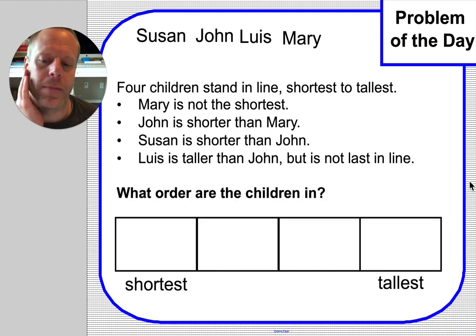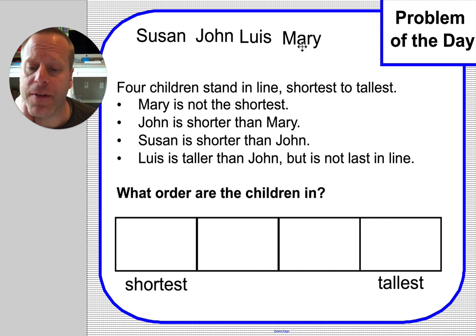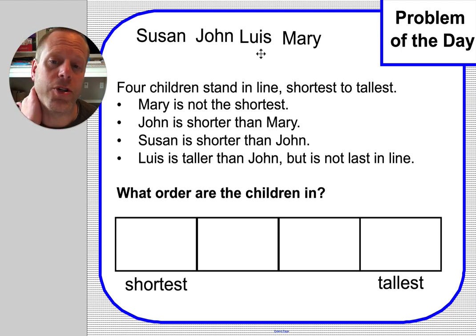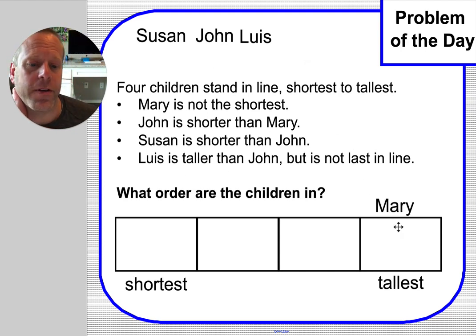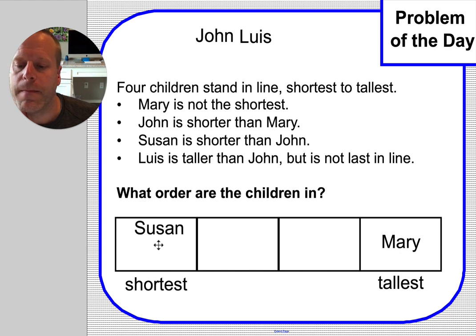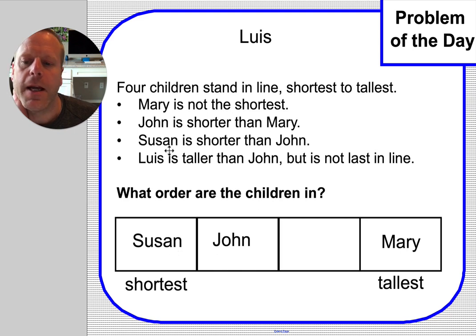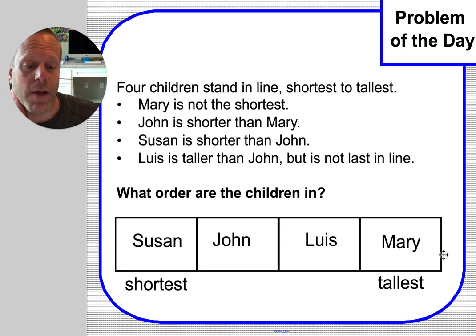Let's see — what order are the children in? Mary is definitely not the shortest. John is shorter than Mary — that's true. Susan is shorter than John — that's true. Louis is taller than John, and he's not last in line. I figured this out: I think Mary is the tallest. Susan is definitely going to be shorter than John. Louis should be on this side of John, but he doesn't qualify as being last in line because Mary is the tallest — Mary is the last.